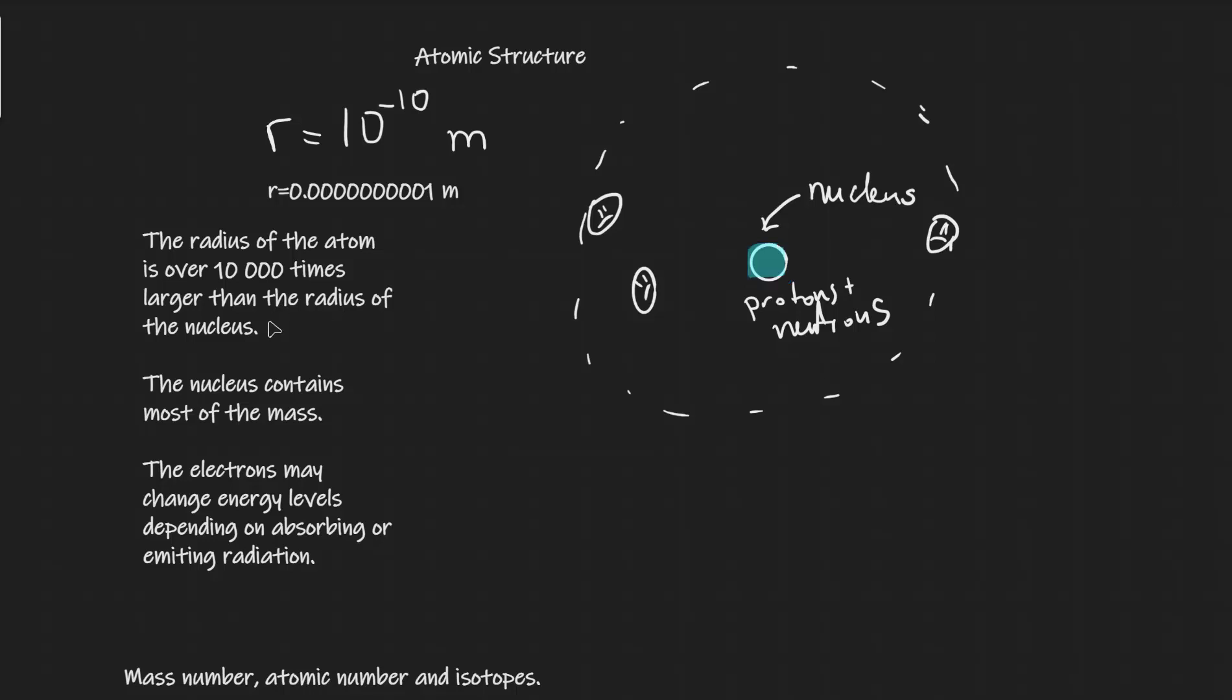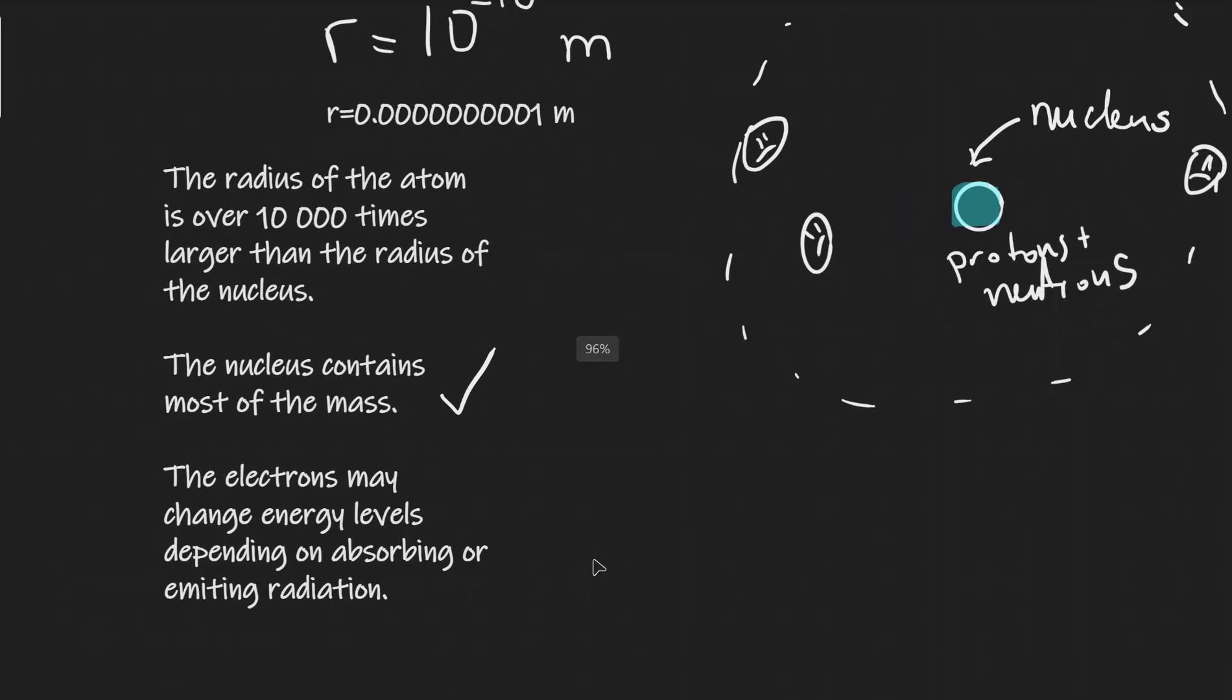Additionally and interestingly, the nucleus contains most of the mass. So almost all of the mass is in this small positively charged nucleus. The electrons can actually move around. They can change energy levels and that depends on absorbing or emitting radiation.